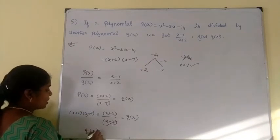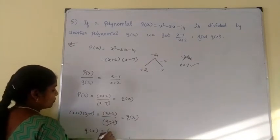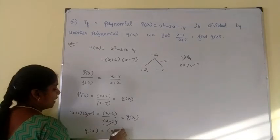Therefore, Q of x is equal to x plus 2 into x plus 2, which is nothing but x plus 2 to the whole square. This is the answer.